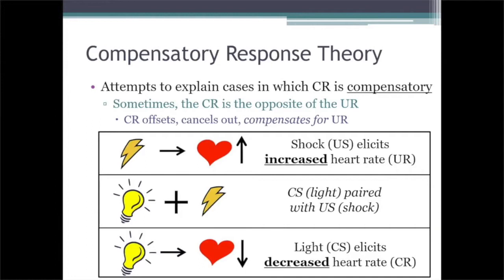If you administer electric shocks to a rat's feet, that rat will jump, which is true. But another unconditioned response that a shock will elicit is an increase in heart rate — if you shock a rat, its pulse will go up. But if you pair a light with shock repeatedly — light, shock, over and over again — the animal will eventually acquire a compensatory conditioned response to the light. So its heart rate will actually decrease in response to the light.